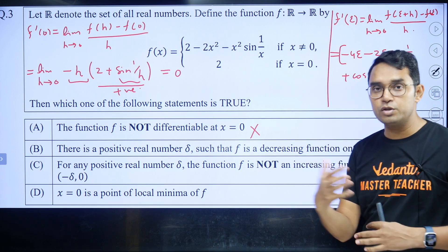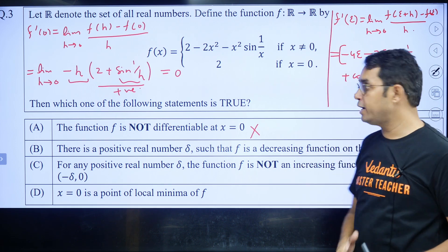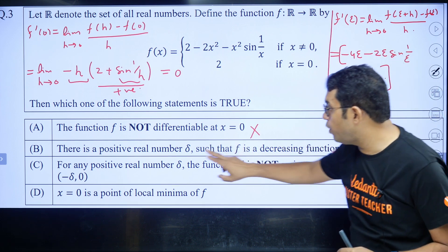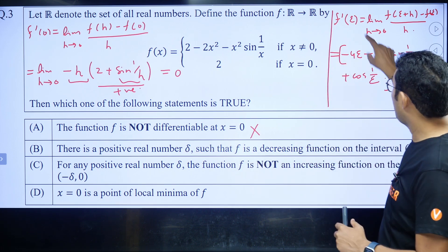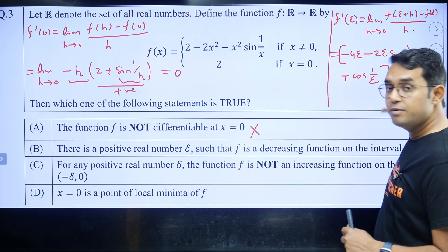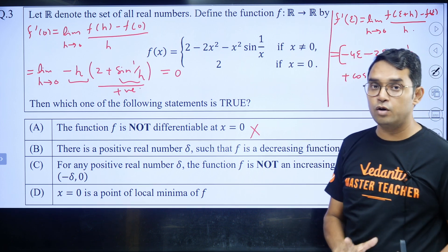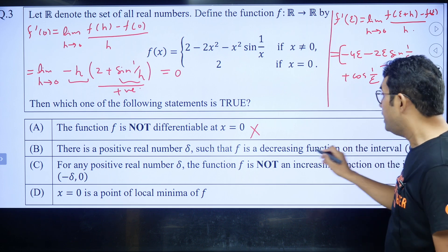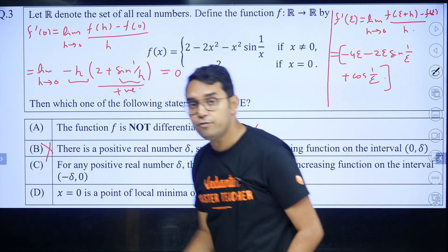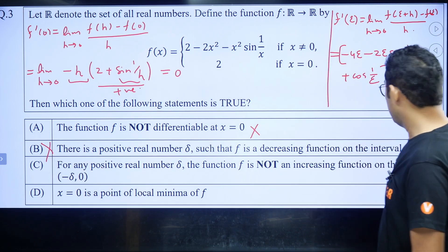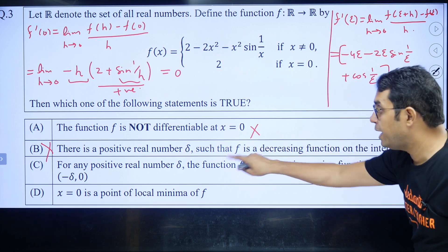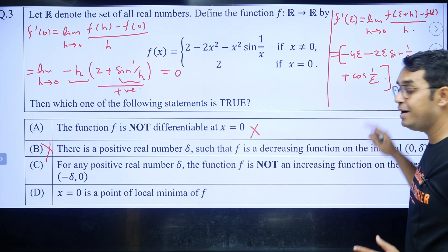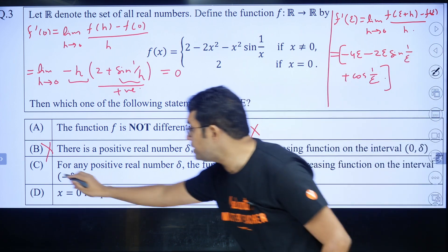So the entire thing will be oscillating between approximately -1 to 1. Whatever small number you choose, you cannot claim that f' will be always positive or always negative. So saying that this function is decreasing on the interval (0, δ) is wrong. In fact, on both sides, whether (0, δ) or (-δ, 0), you cannot say it will be decreasing or increasing. That's why option C is correct.